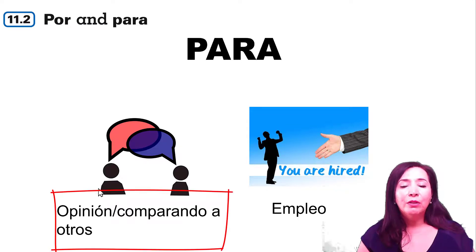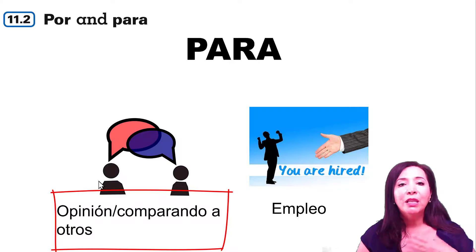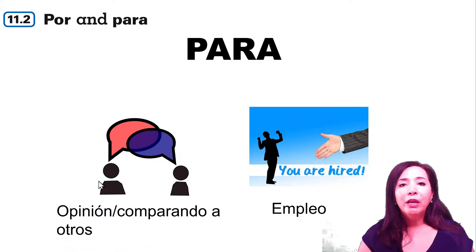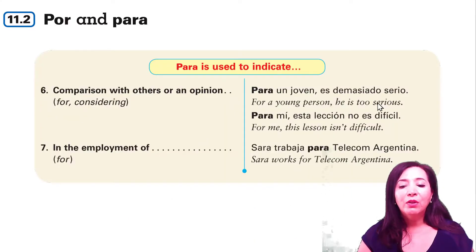Also, if you have an opinion, you could say, para mí, esto es muy simple — for me, this is very simple. Or if you're comparing somebody to others: esa muchacha, para ser tan joven, canta muy bien. O empleo: yo trabajo para nuestra señora del lago. More examples: para un joven es demasiado serio. Para mí, esta lección no es difícil. In the employment of: Sara trabaja para Telecom Argentina.